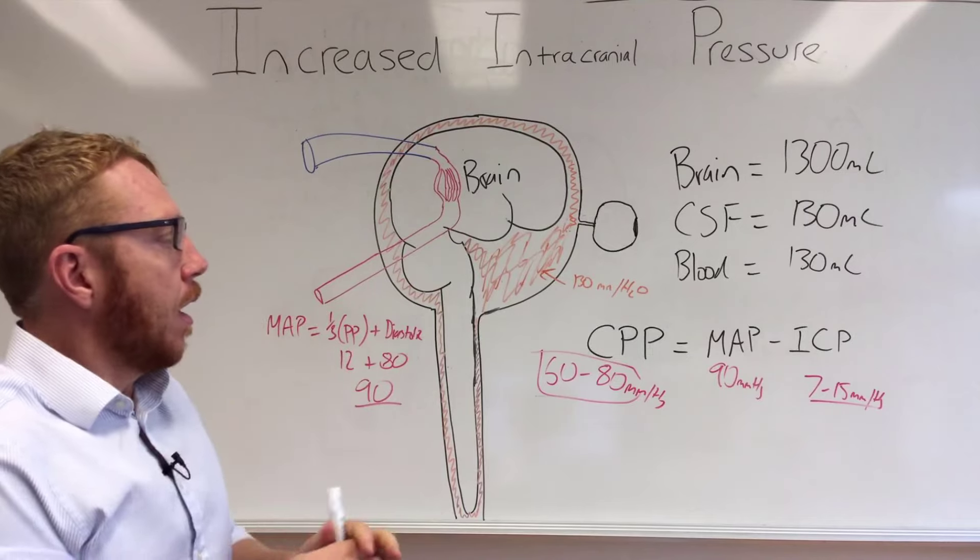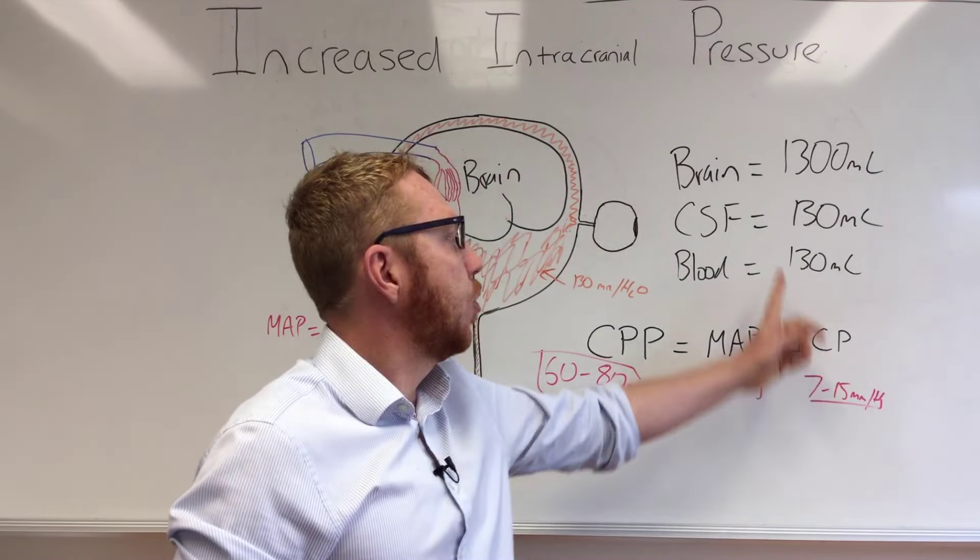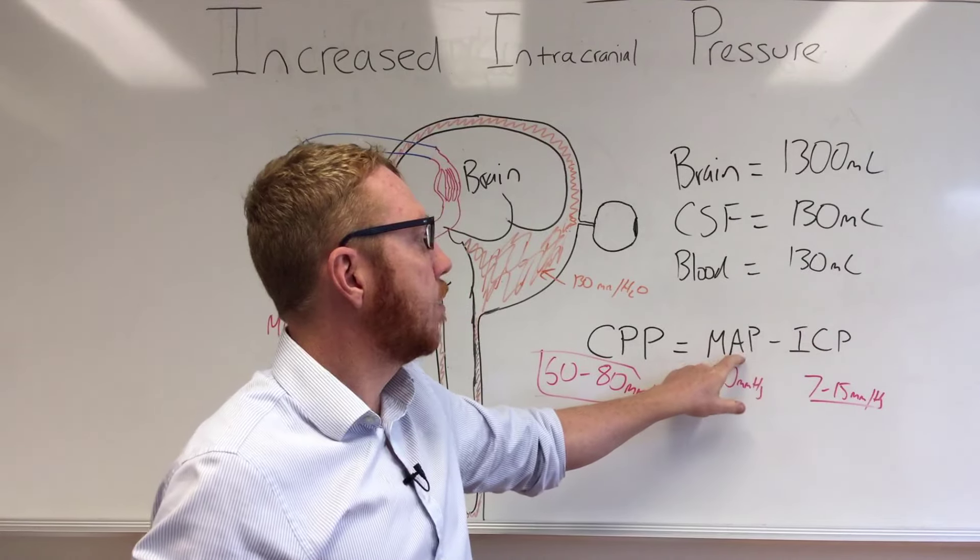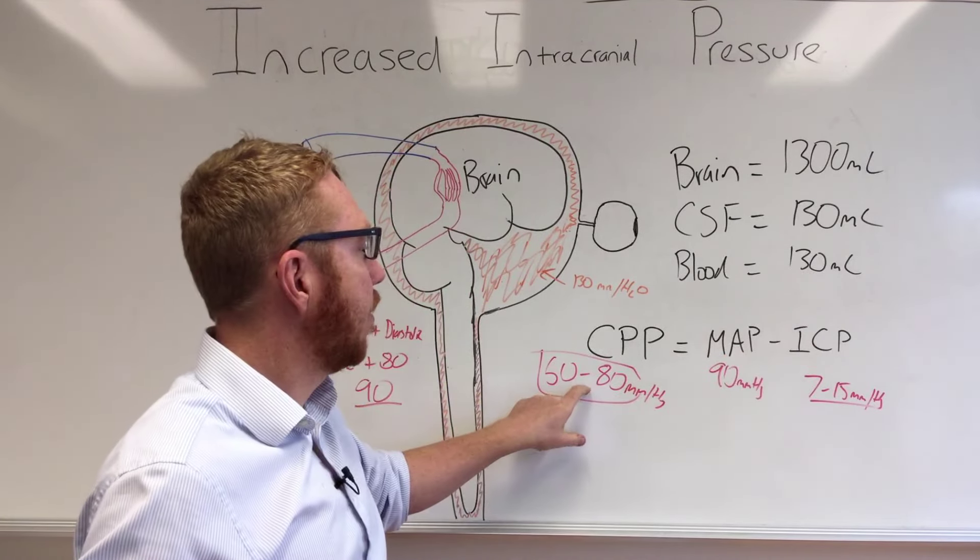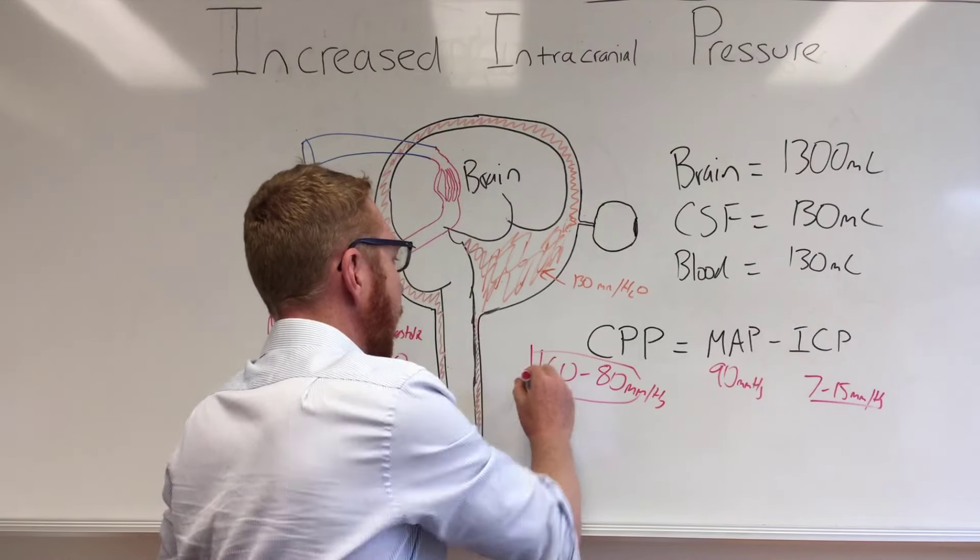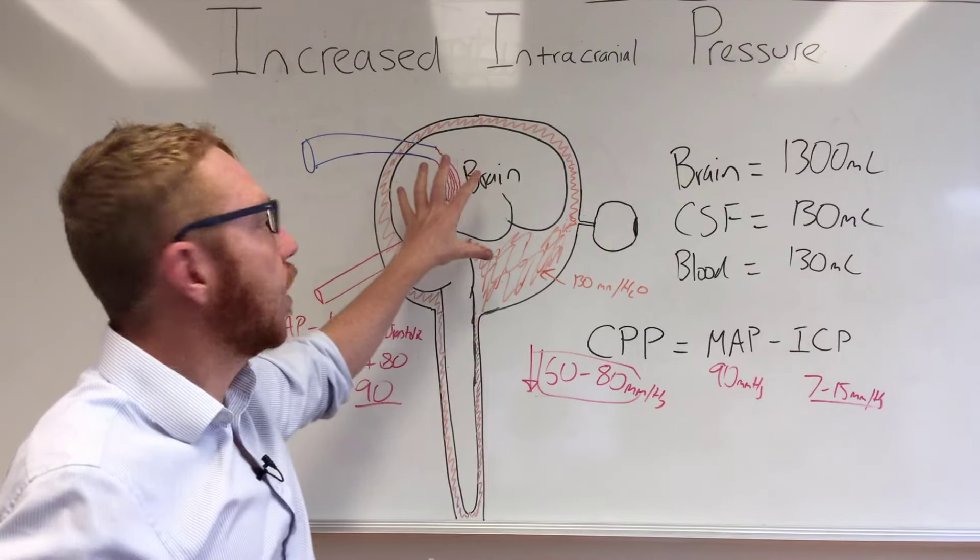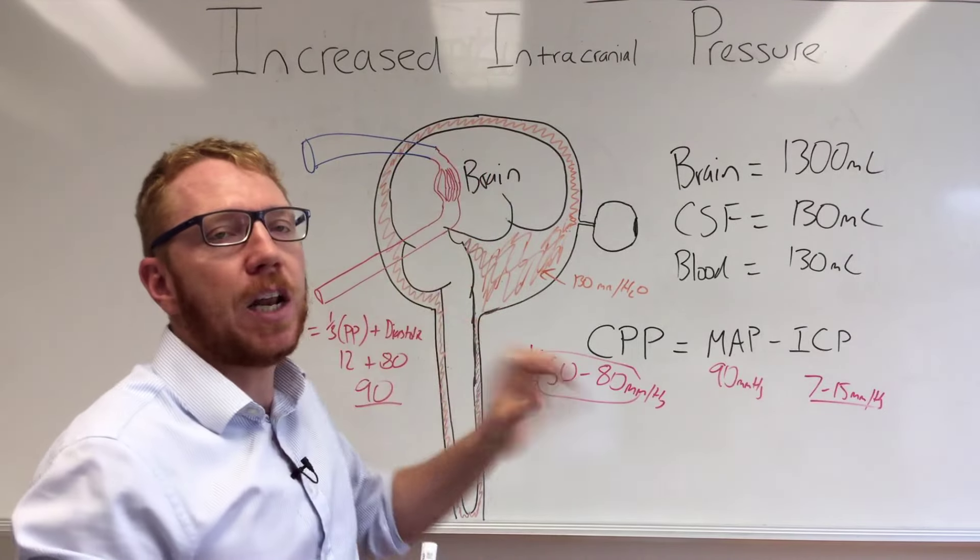In today's context, if this number starts to increase and get closer to the MAP, that means this number will drop. If this number goes down, your brain isn't being perfused, therefore your brain's not going to be working very well and there's going to be problems.